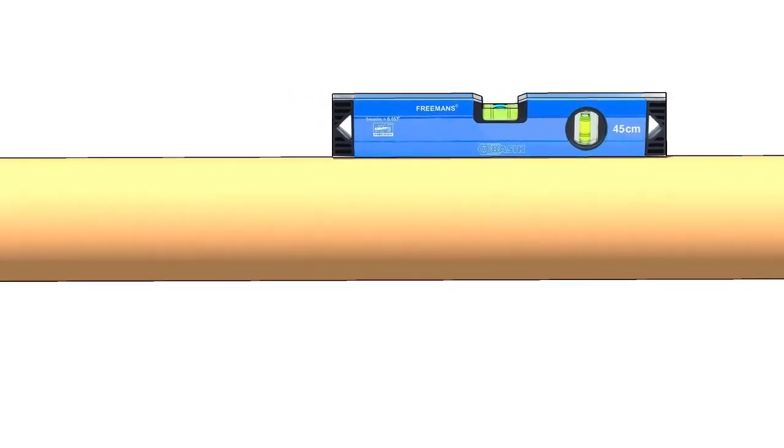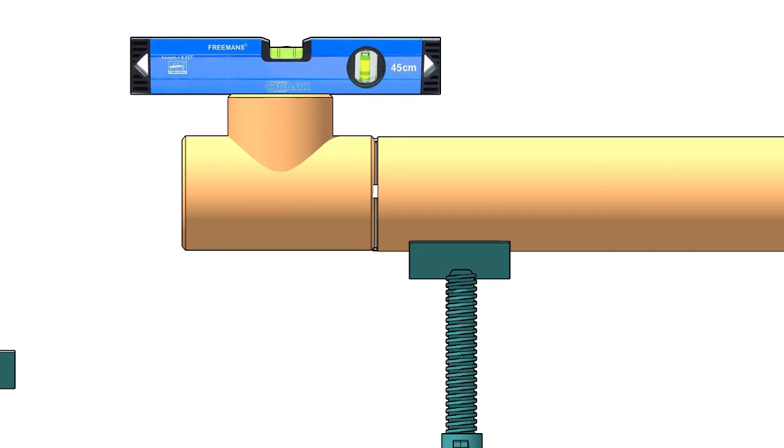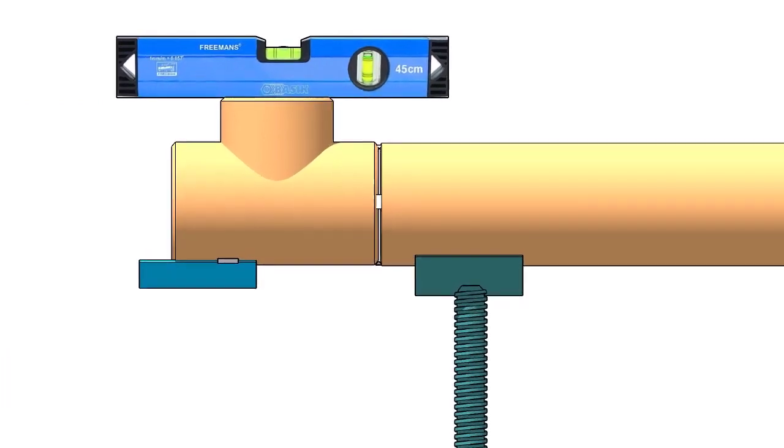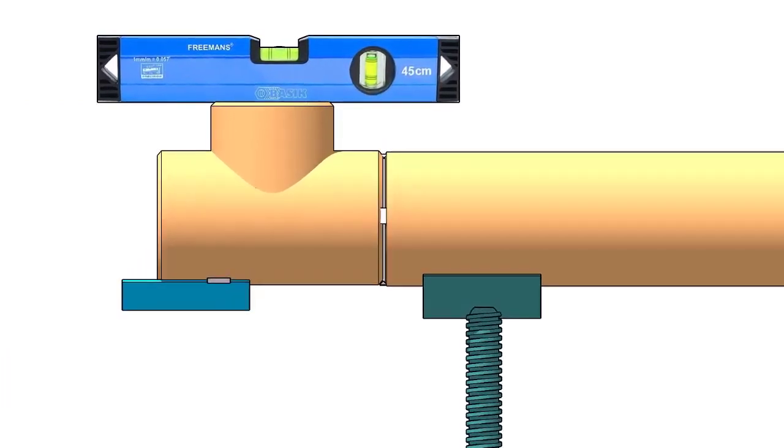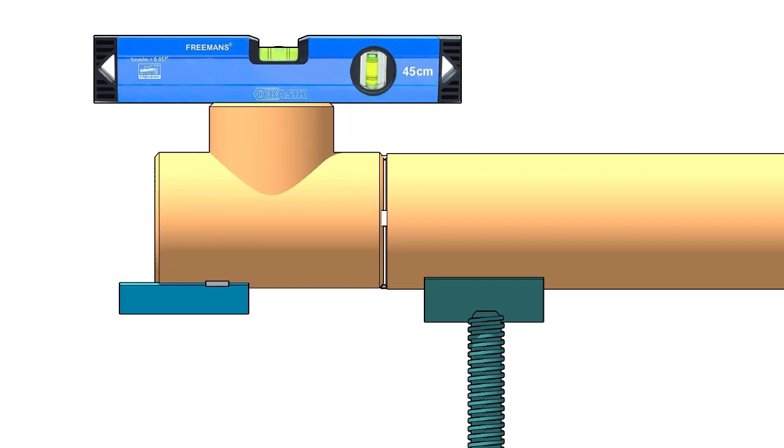Mark the center lines of the tee and the elbow. Tack weld the piece of angle below the tee if you don't have a ready-made pipe clamp. The size of the angle cleat may vary according to the size of the elbow. Here I am using a 50-50 angle because the pipe dia is 6-inch.